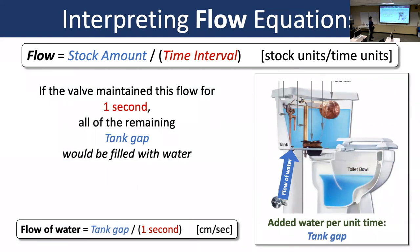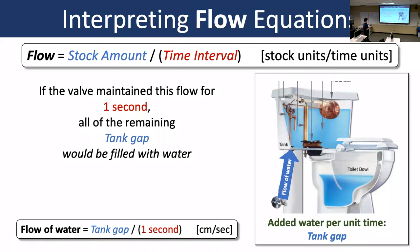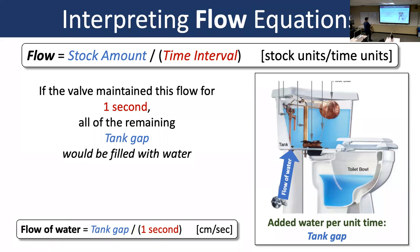For balancing systems — where it's harder to think in terms of growth — we interpret the flow rates differently. For the toilet: if the valve is maintained at this flow for one second, the remaining tank gap will be filled. Flow of water equals tank gap. This should raise a flag: flow of water should be centimeters per second but tank gap is centimeters. There's a hidden factor of one — we're assuming the valve pumps in water at a rate of 15 centimeters per second when the tank gap equals 15 centimeters.